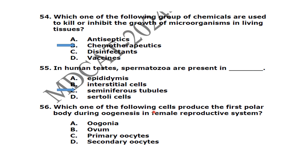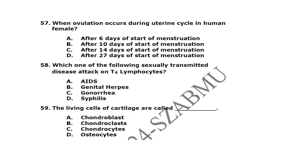In human testes, spermatocytes are present in the seminiferous tubules. Which one of the following cells produces the first polar body during oogenesis? The primary oocyte produces the first polar body. Ovulation occurs during the uterine cycle in the human female after 14 days from the start of maturation.